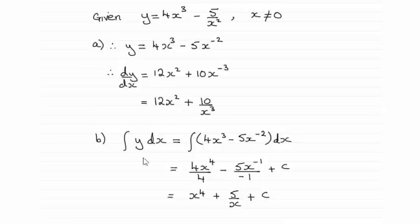And in part b, you had to find the integral of y with respect to x, and giving that in its simplest form is going to be x to the power 4 plus 5 over x plus c, c being a constant of integration.